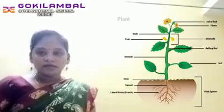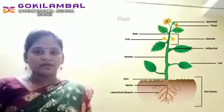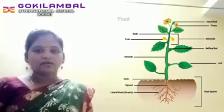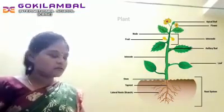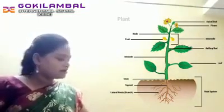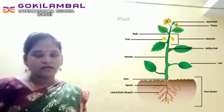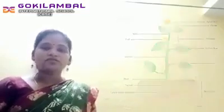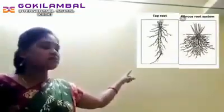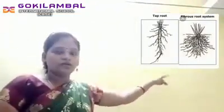First, we will discuss about the root system. Usually, the root system remains below the soil level. Usually, plants contain two types of roots: the first one is taproot and the second one is fibrous root.